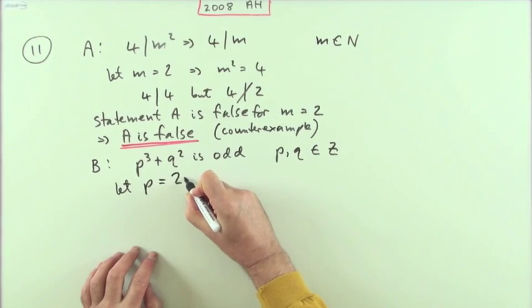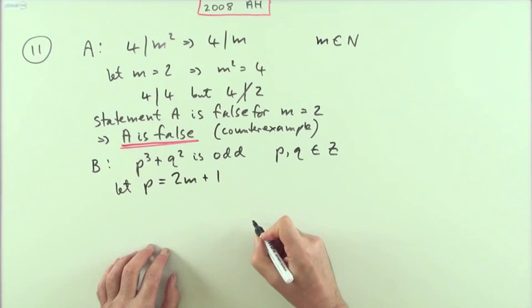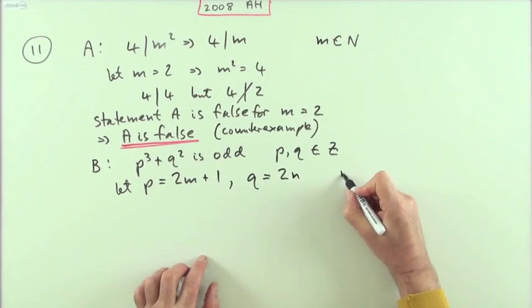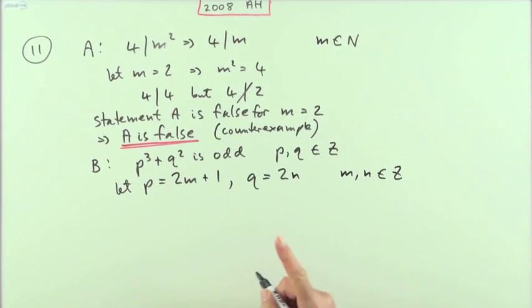So I could say let p equal 2m plus 1, and q equal to - I can't use m again because if I write q equal to 2m, that implies we've got two consecutive integers and we'd only be proving it for consecutive integers. So some other number n, where m and n are also integers.